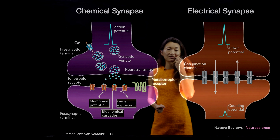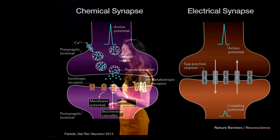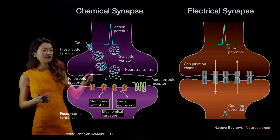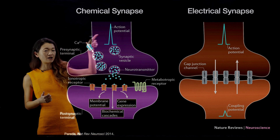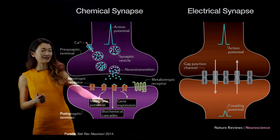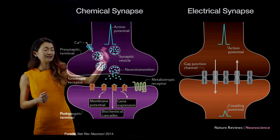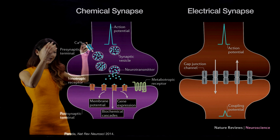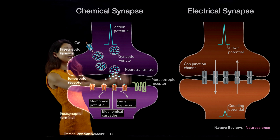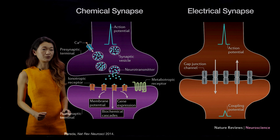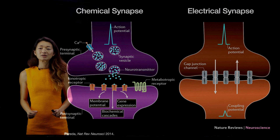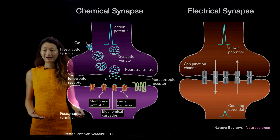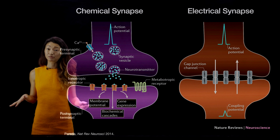In the electrical synapse, rather than the hundred microseconds or so it might take for an action potential to cause something to happen on the post-synaptic side, transmission is nearly instantaneous. All that needs to happen is for the action potential to directly propagate across that synapse. So in terms of pros and cons, you might want an electrical synapse when you want something to happen very quickly and very reliably.